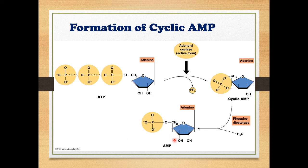Phosphodiesterase breaks the bond in cyclic AMP and converts it to AMP — adenosine monophosphate — by removing the ring structure. In cyclic AMP, there is a phosphoester bond at the 5' carbon position and another at the 3' carbon position, giving two phosphoester bonds — hence it is called a diester bond. So simply: adenylyl cyclase removes two phosphate groups from ATP, and the remaining phosphate attaches to the 3' position of ribose to form cyclic AMP.